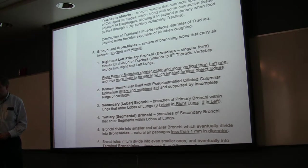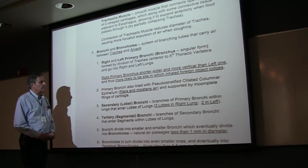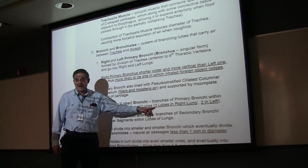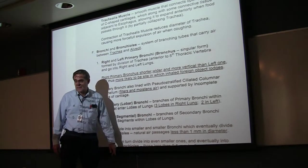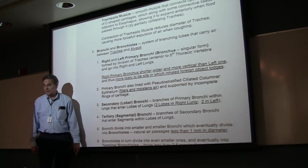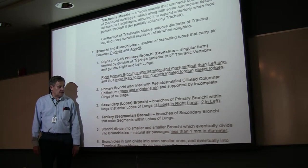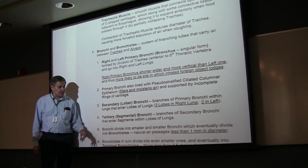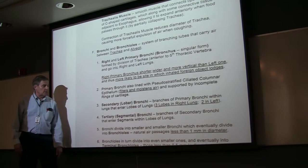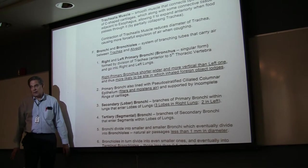These branches are the secondary lobar bronchi. Since there are three lobes in the right lung, you have three on the right, and two lobes in the left, so two on the left. They subdivide into the tertiary or segmental bronchi, which go to the segments of the lungs.